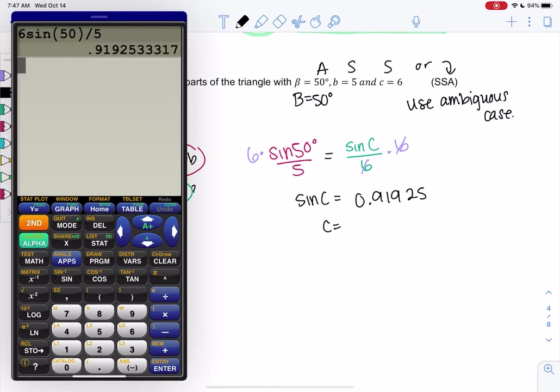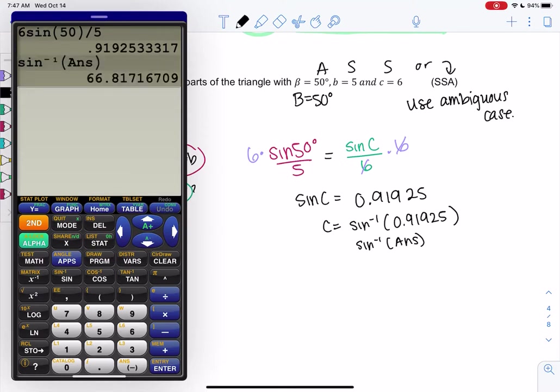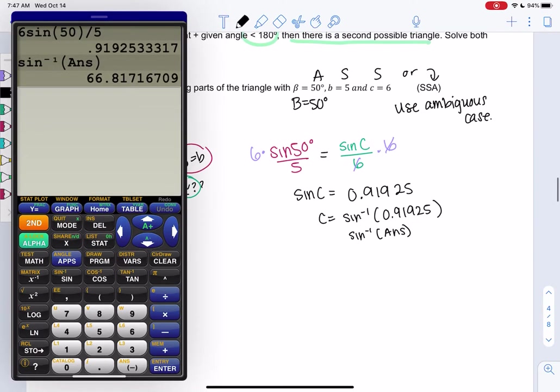So then to solve for C, this is where we use sine inverse. So keep a lot of decimal places. If you have a calculator where you can use second ans, it'll use all of the digits. But otherwise, just type a bunch of digits. And we get an angle of 66 degrees, which is possible.